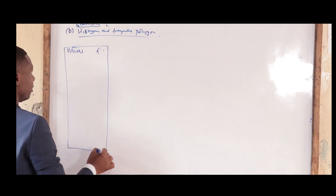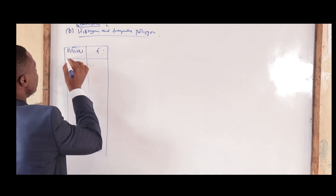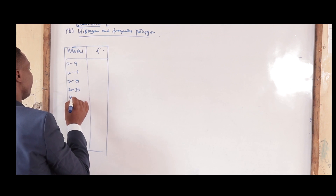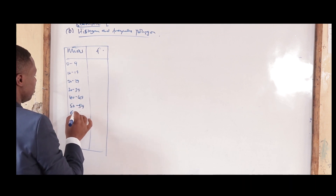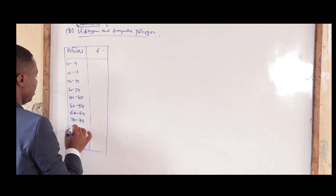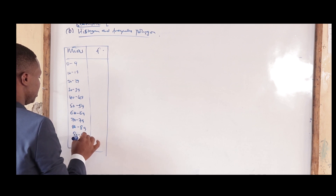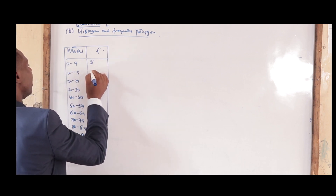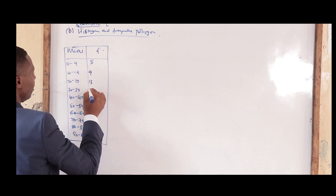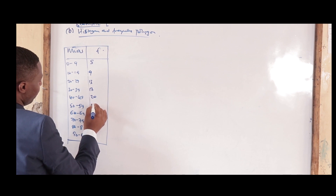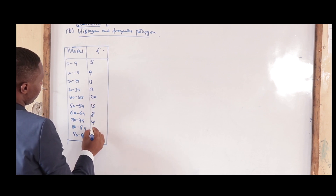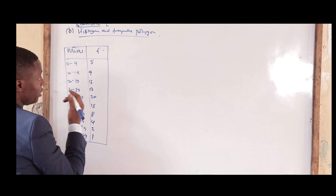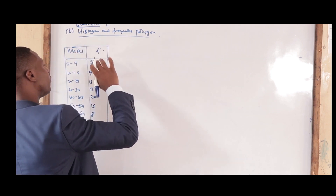We are given the class intervals and the frequency. The classes are: 0 to 9, 10 to 19, 20 to 29, 30 to 39, 40 to 49, 50 to 59, 60 to 69, 70 to 79, 80 to 89, and 90 to 99. The frequencies are: 5, 9, 13, 17, 20, 15, 8, 4, 2, and 1. Then you are asked to draw a histogram and a frequency polygon from this data.